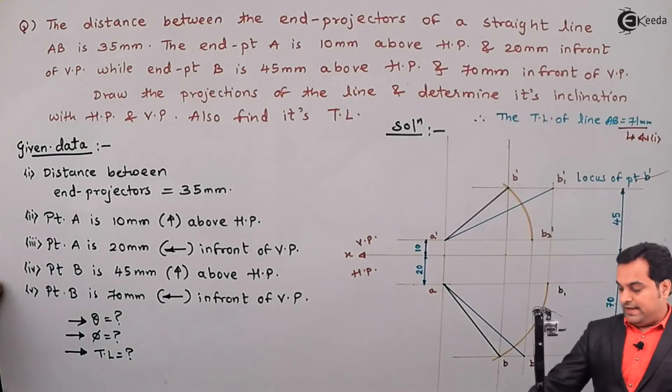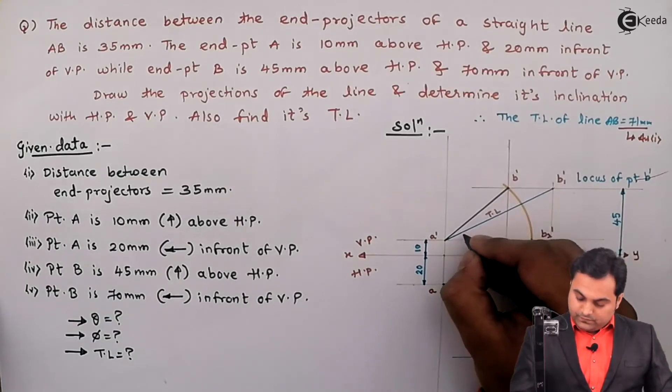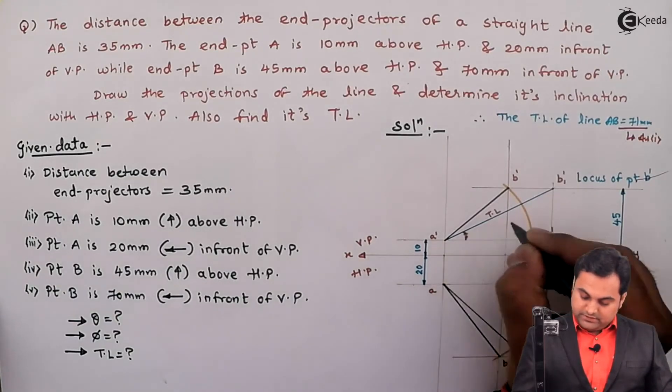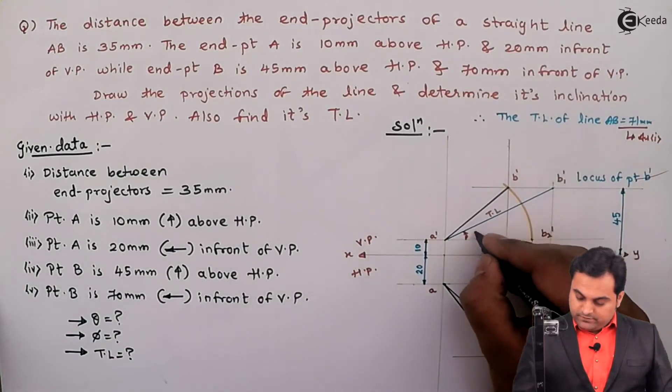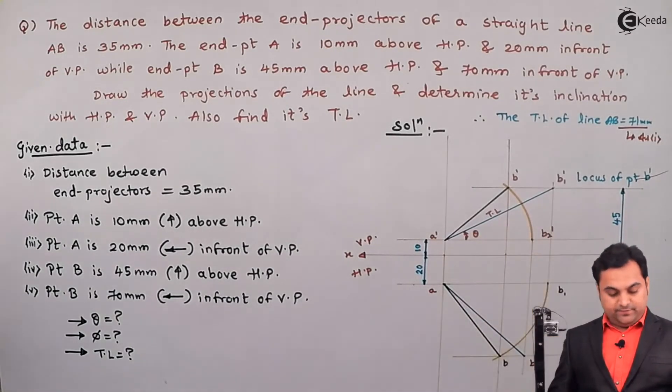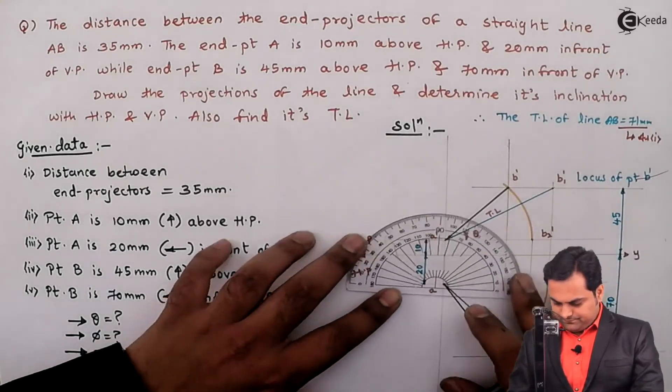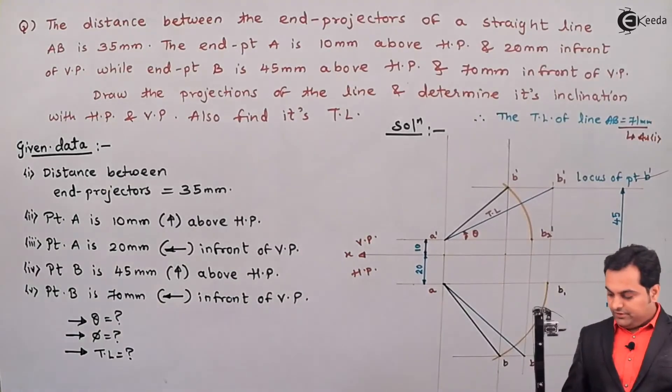Then the angle made by the TL which is here, this angle will be called as theta because it is inclination with HP seen in VP. Measuring that angle - 30 degrees.